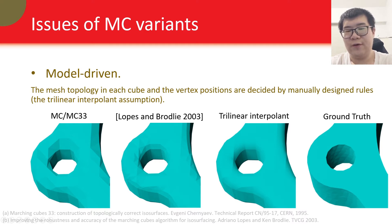Usually the rules follow the trilinear interpolant assumption. It assumes the implicit field inside each cube follows trilinear interpolation with respect to the values of its eight corner vertices. We show the trilinear interpolant of the input grid here. And as you can see, it's quite different from the actual ground truth, as shown on the right.